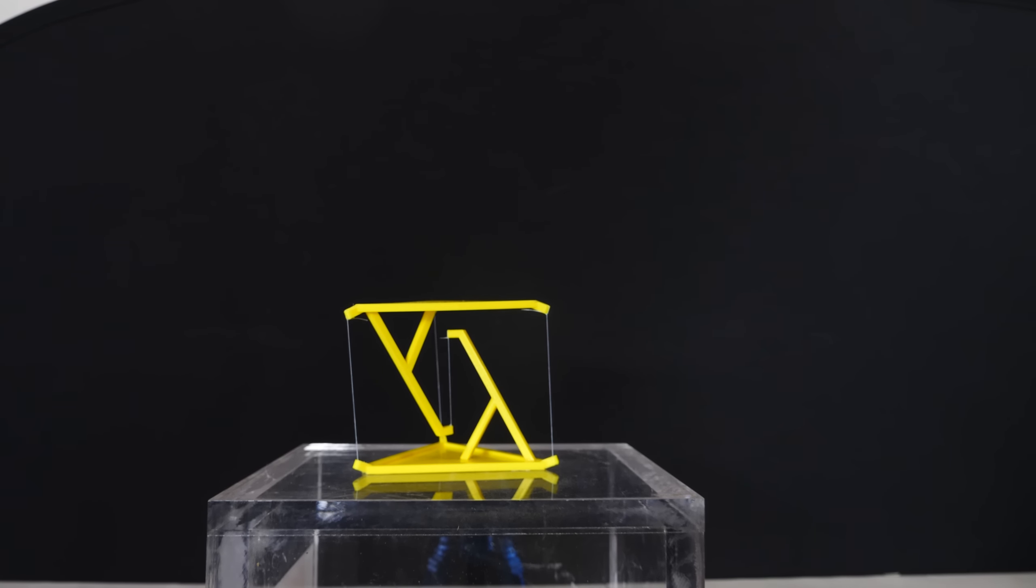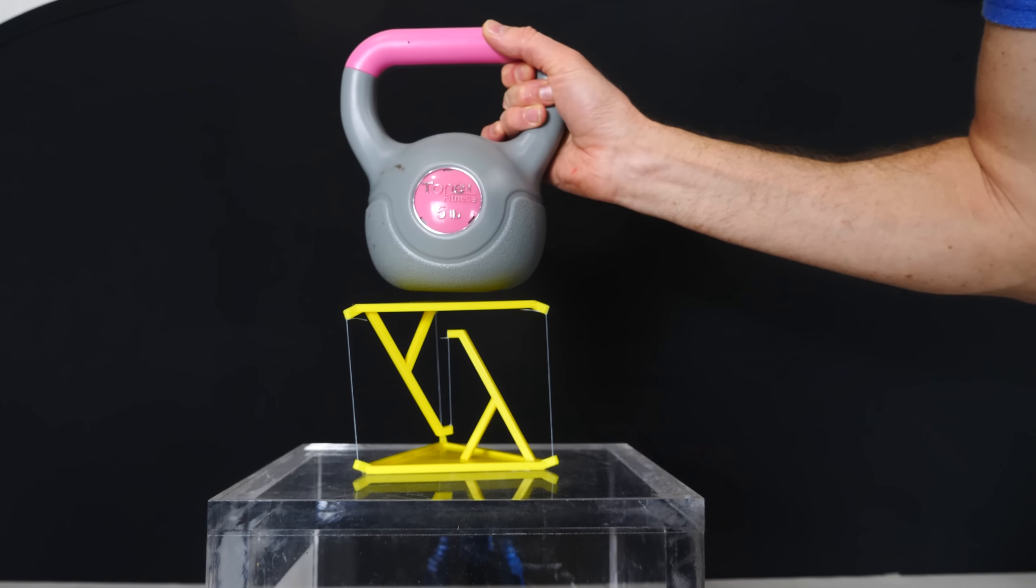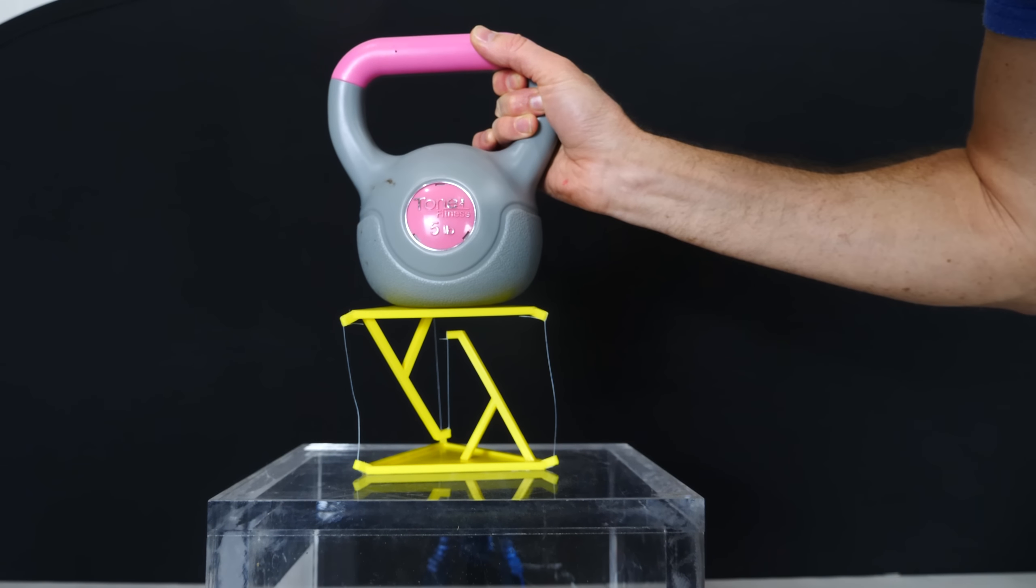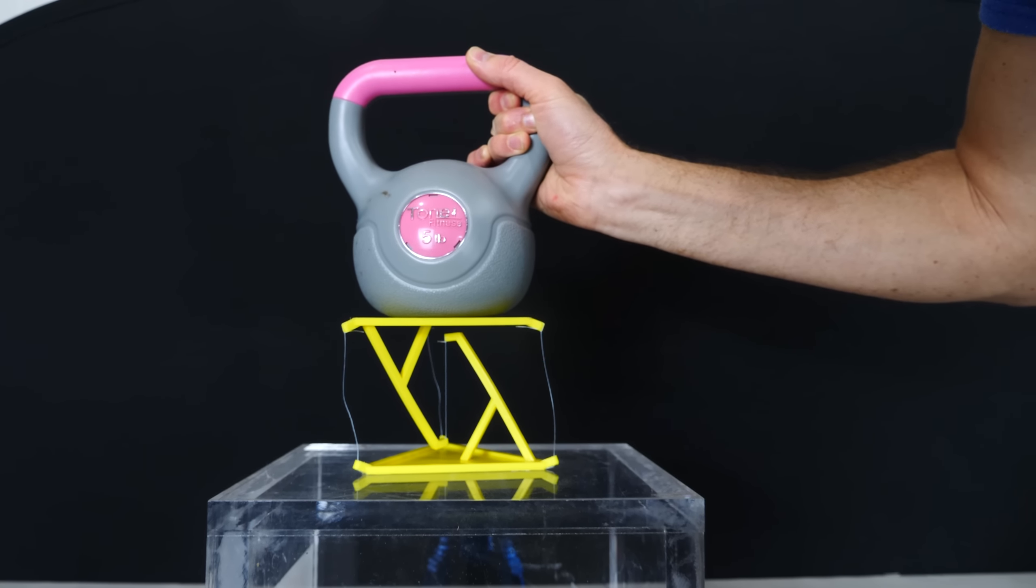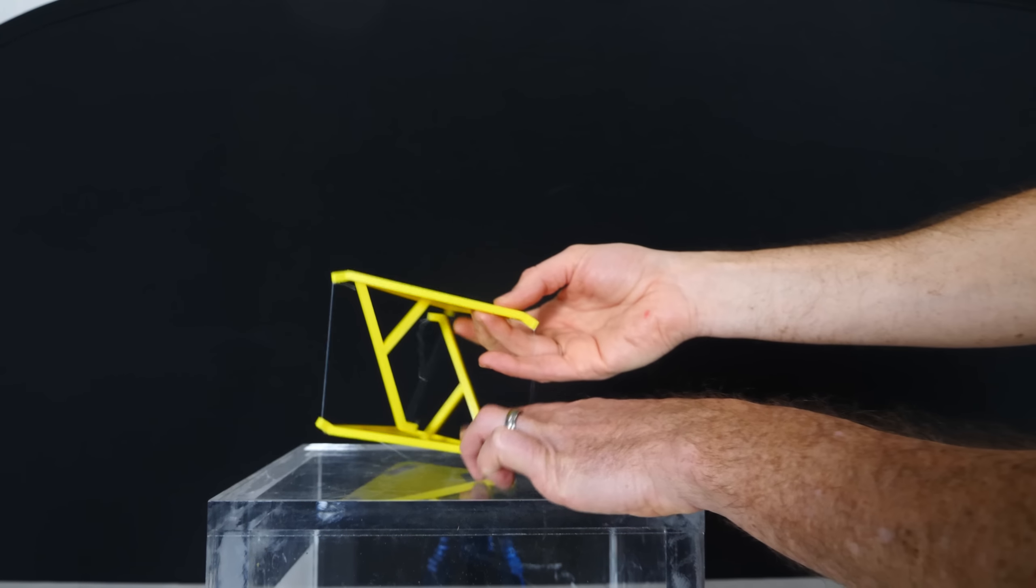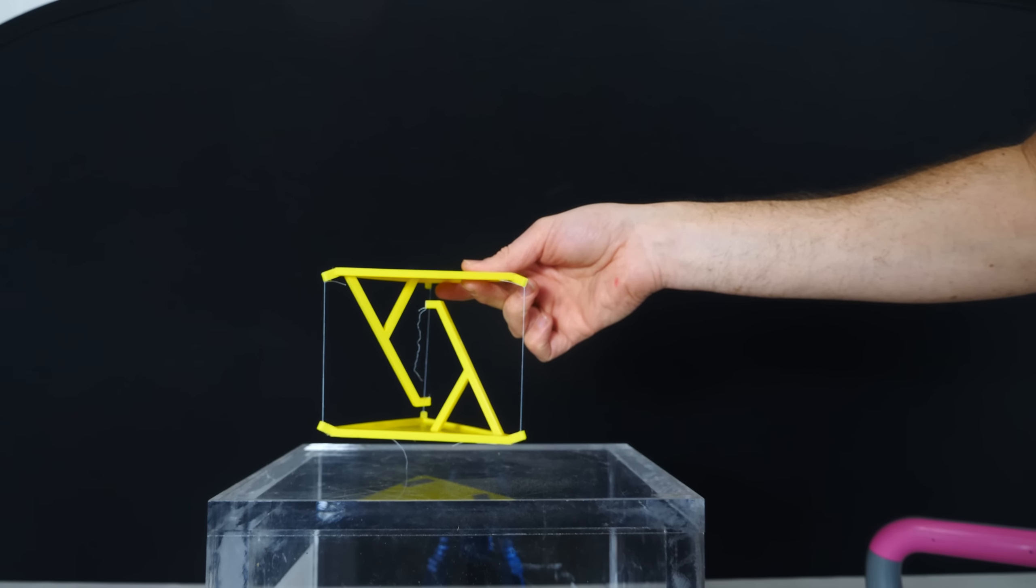So to figure out how this is working, let's add a little bit more weight and see where we can see some of the deformation. So where did it break? The center string.